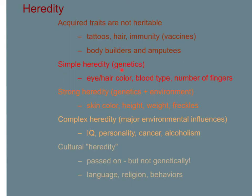Simple heredity — things that are genetically passed on — include hair, eye color, blood type, and numbers of fingers, as we've just said. Those are inherited, genetically inherited traits.